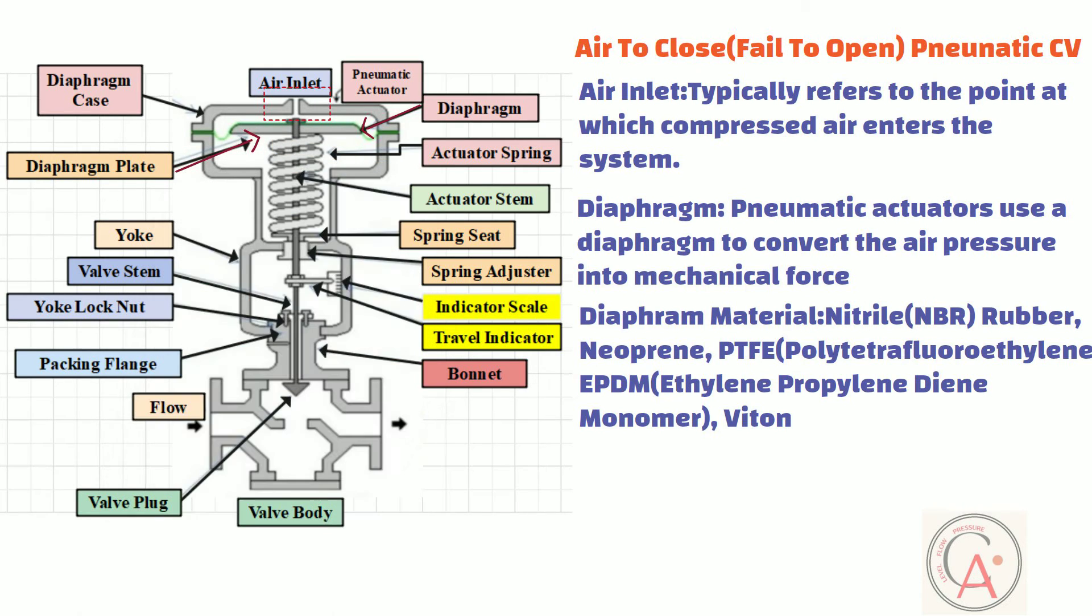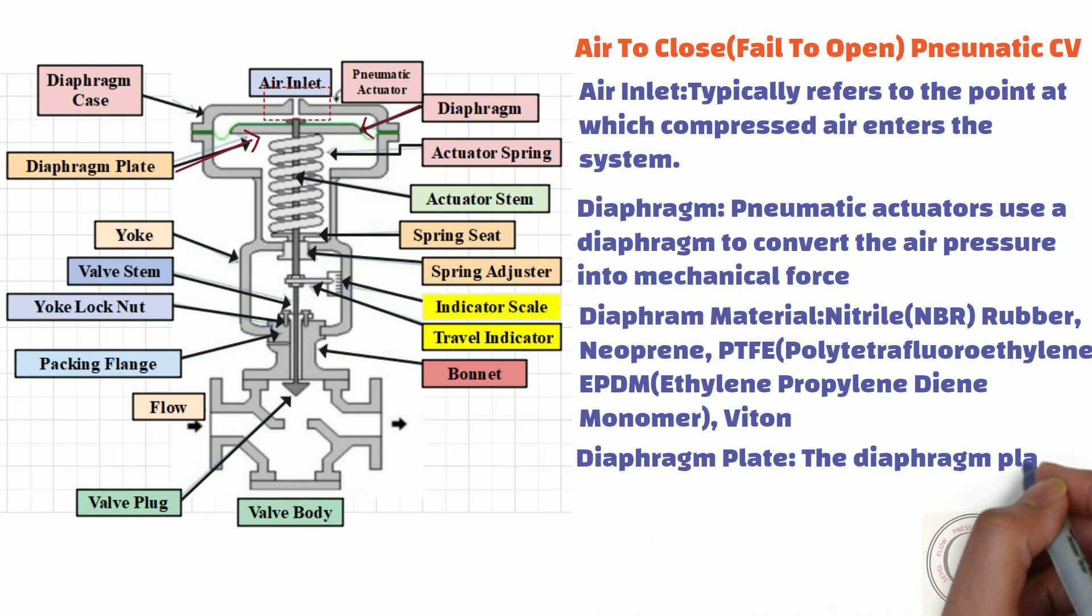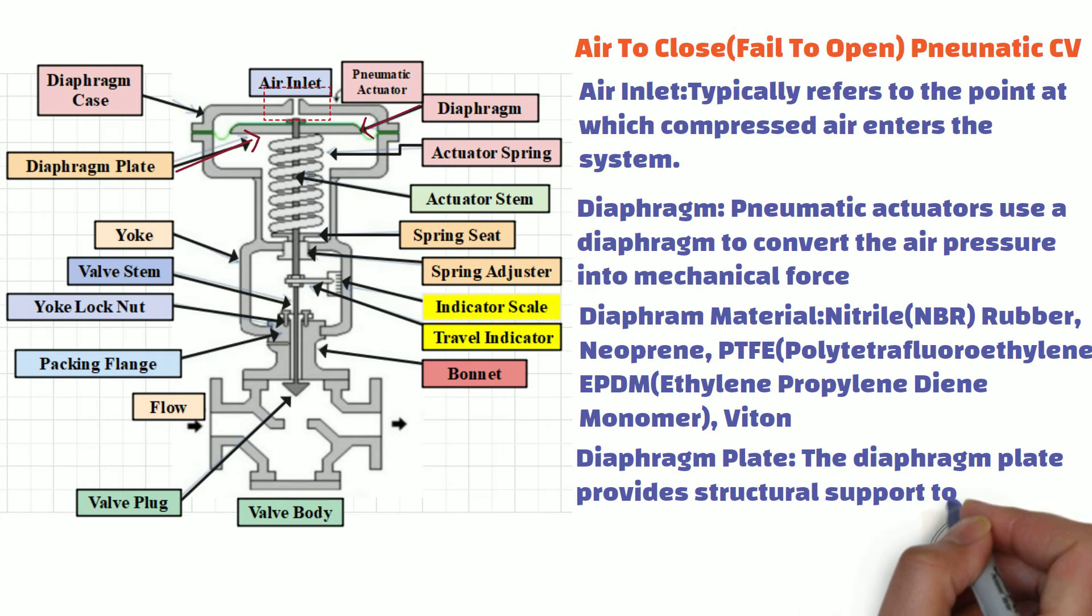As you can see, this part is known as the diaphragm plate. The diaphragm plate provides structural support to the diaphragm. It helps maintain the shape and integrity of the diaphragm, especially when subjected to varying air pressures during valve operation. When compressed air is introduced into the actuator's chamber, it applies force to the diaphragm. The diaphragm plate transmits this force to the valve stem or actuator mechanism, causing the valve to open, close, or modulate according to the control signal received.